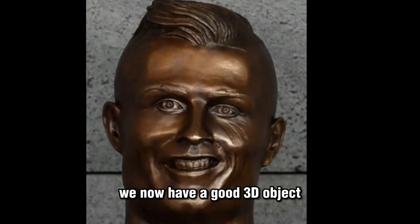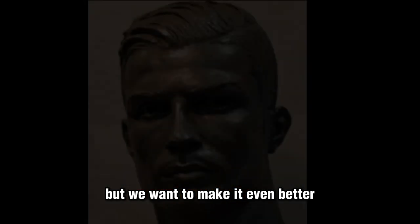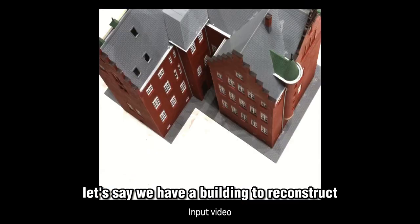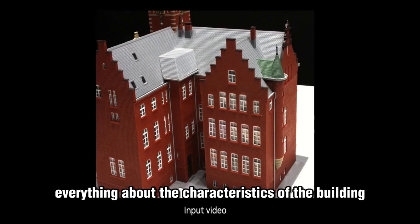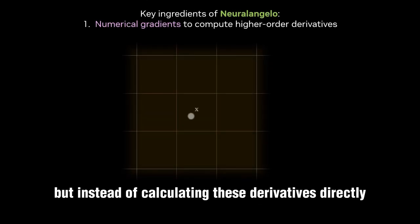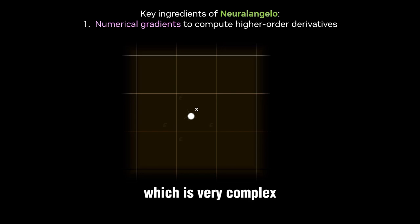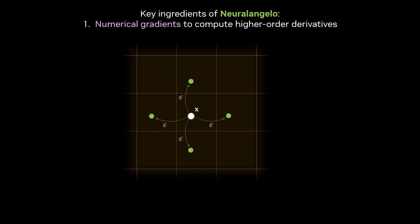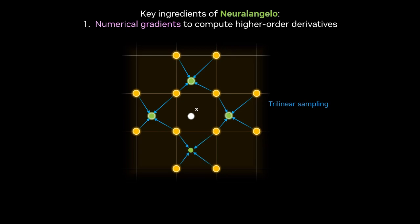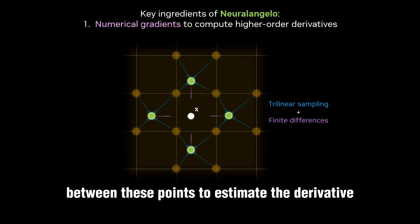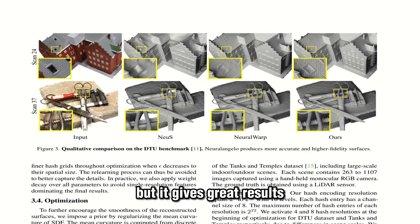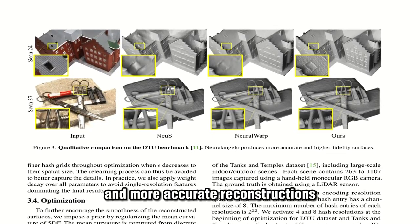After all this, we have a good 3D object, but we want to make it even better — smoother edges and more details at higher resolution. There is a lot of math involved. For example, to reconstruct a building we need to know everything about its characteristics: the shape, the curvature, everything. They use higher-order derivatives, but instead of calculating these directly — which is very complex and sometimes even impossible — they use numerical gradients to approximate them. They evaluate the function at multiple points and use the differences between these points to estimate the derivative, giving us smoother and more accurate reconstructions.